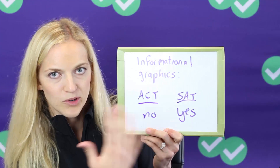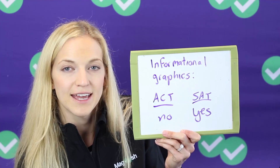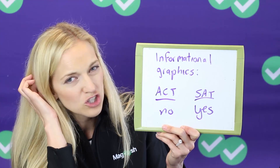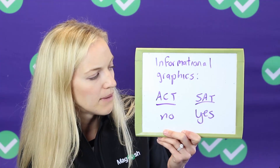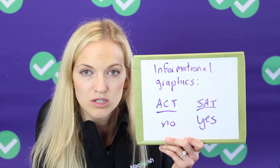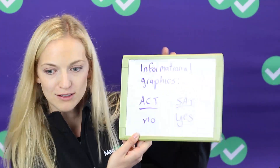The new SAT includes questions involving informational graphics across all of its sections. On the reading section you'll find graphs integrated in the passage, and you'll find that on the SAT writing section as well. In a passage or question you may see a data table, a chart, or a graph. You're not going to find any of that on the ACT — it's all about just the text. A question on the SAT might ask you to find a discrepancy between statistical data in a table and what's in the passage, or to switch a description to something more specific based on the data.